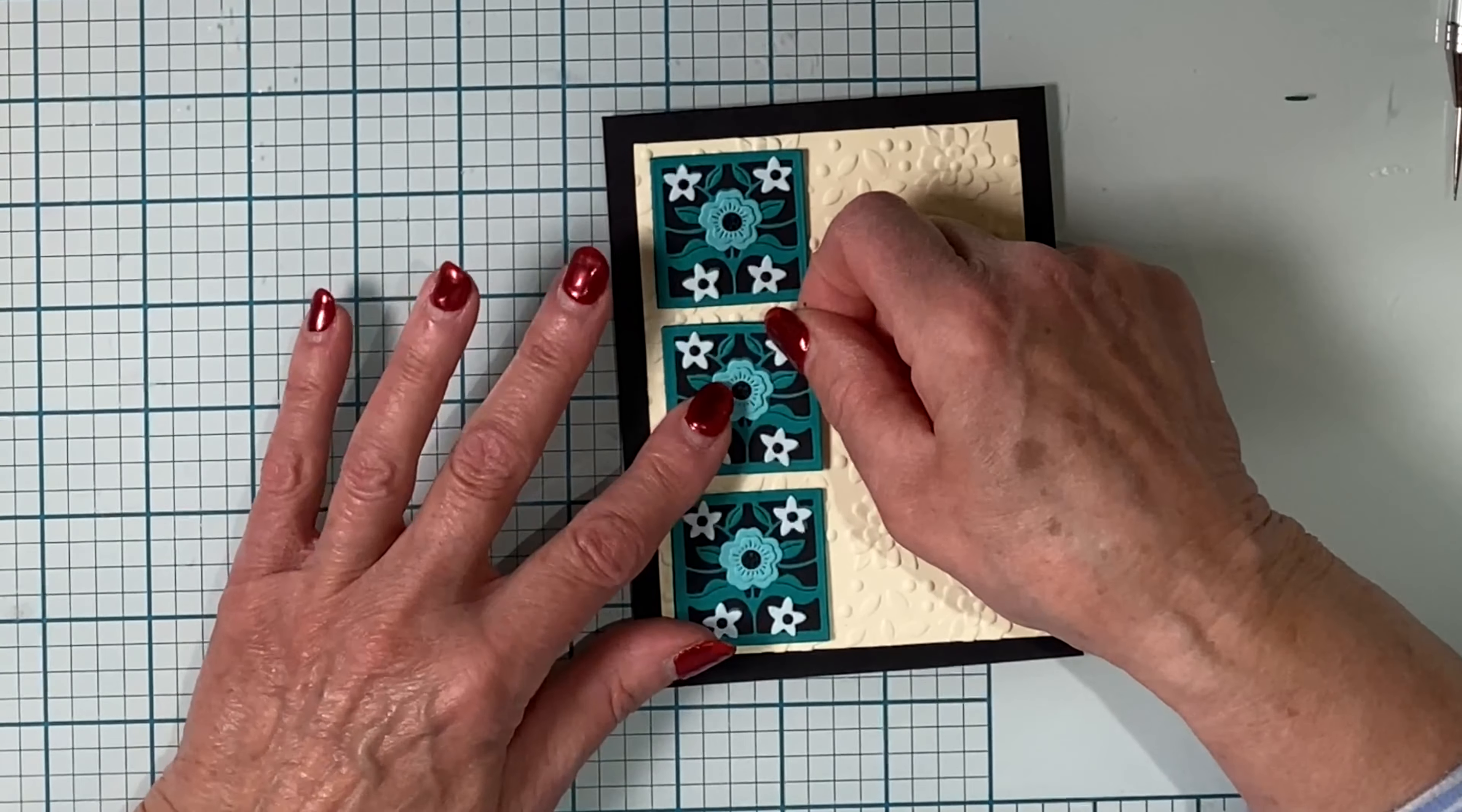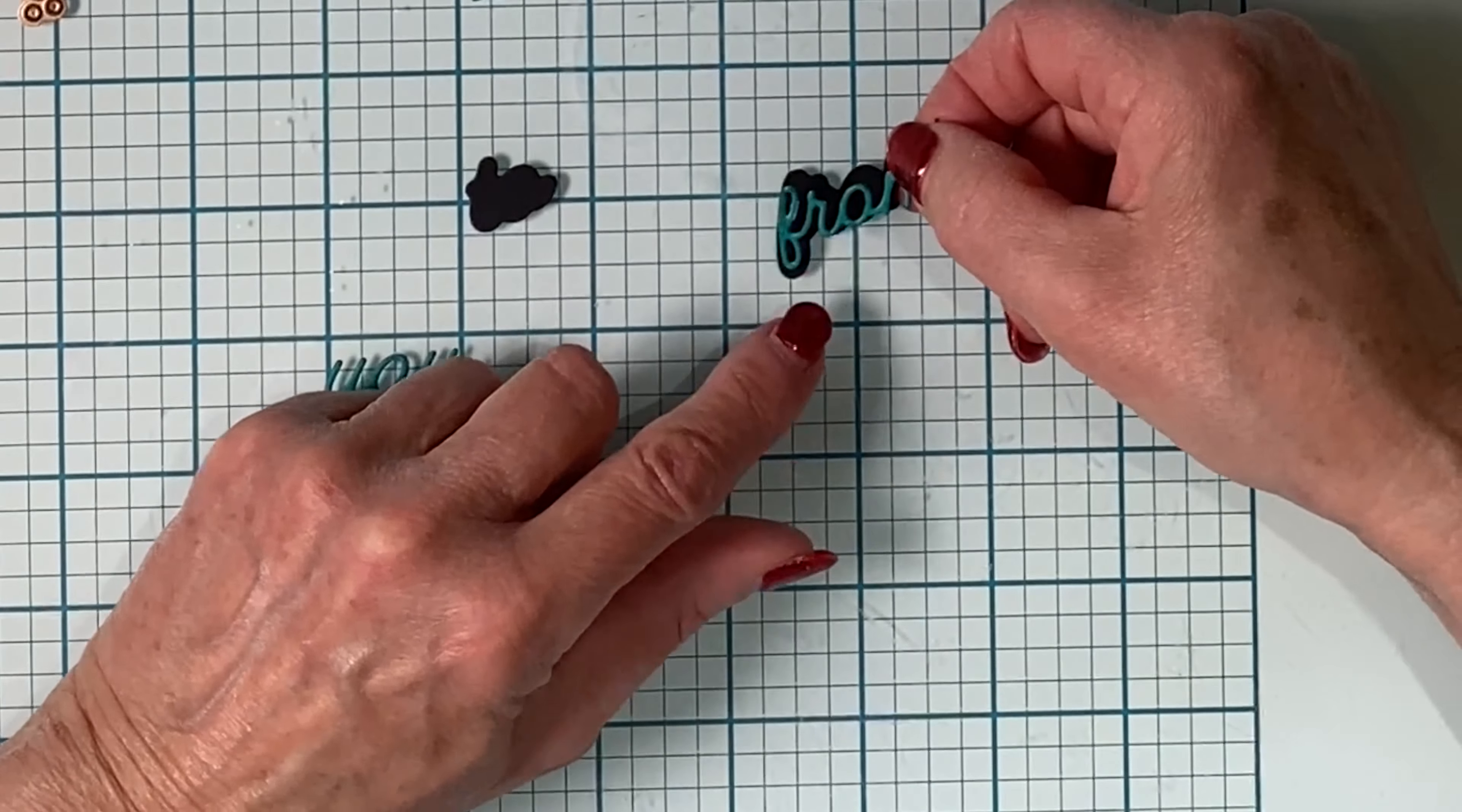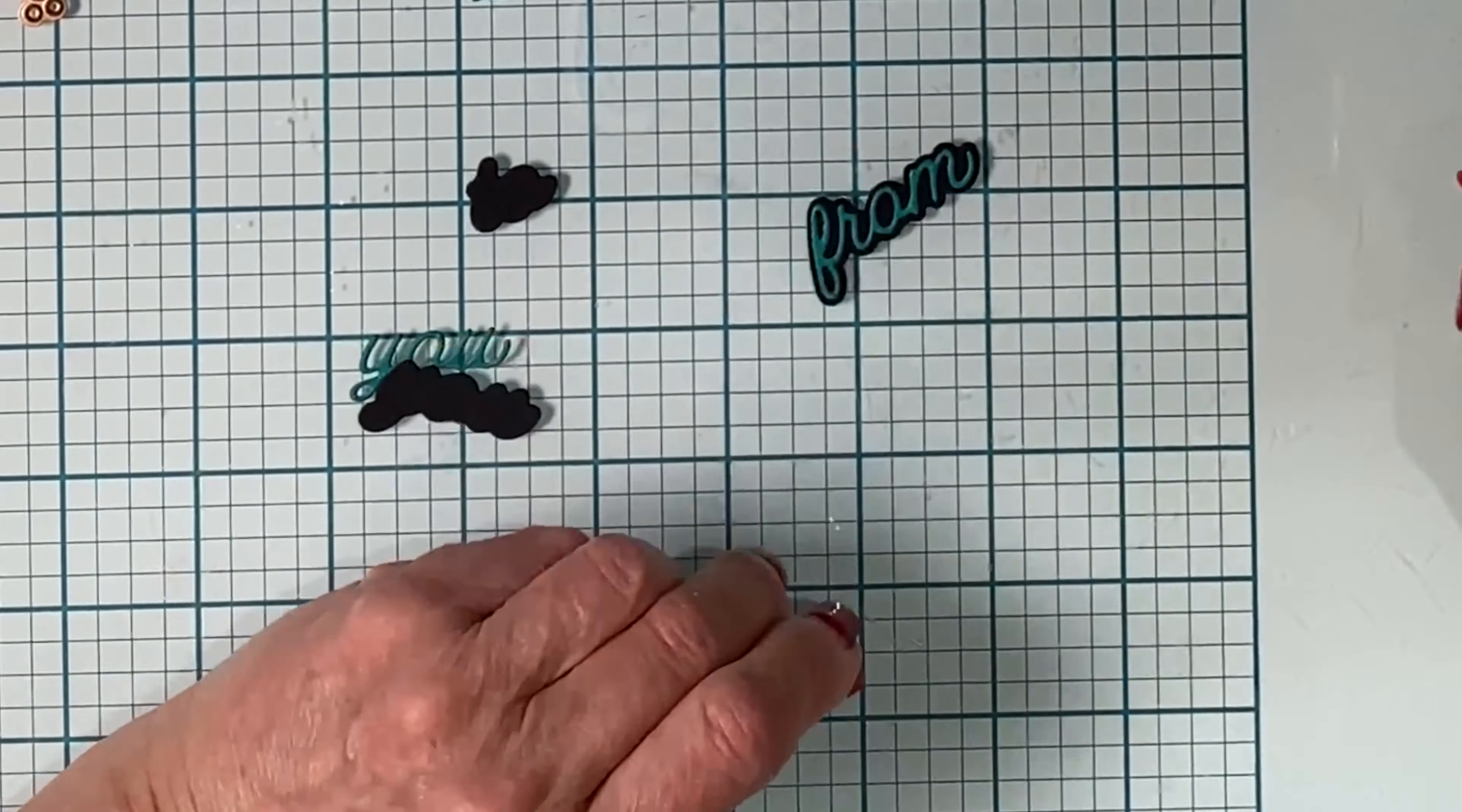And I'm heading back to day four for this fabulous sentiment set from me to you. The shadow dies were used to cut black cardstock.